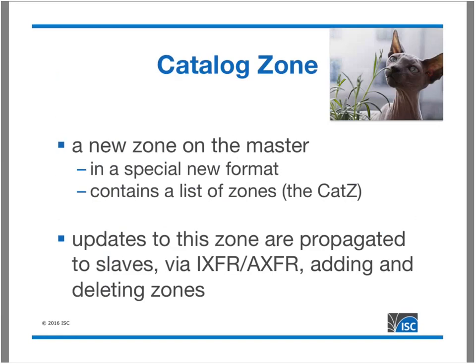What we've done with catalog zones is hopefully take over this task. Catalog zones implement an idea Paul Vixie first proposed over ten years ago — he called it meta zones. A catalog zone is a new zone on the master in a special format containing a list of all the zones on the master. Because it's treated by BIND just like any other zone, updates are propagated to slaves using the same mechanism you've already been using.